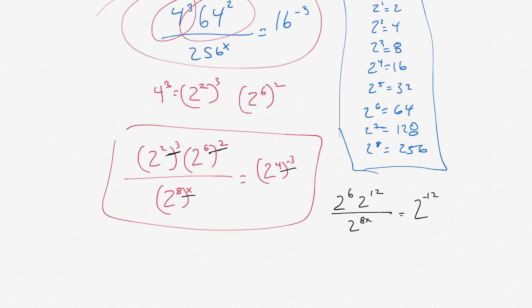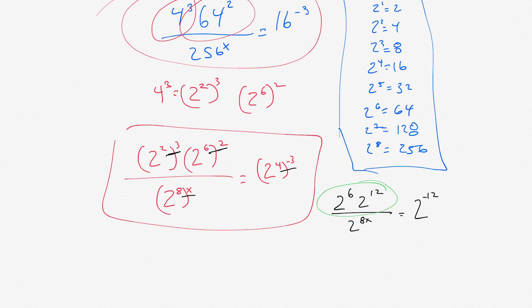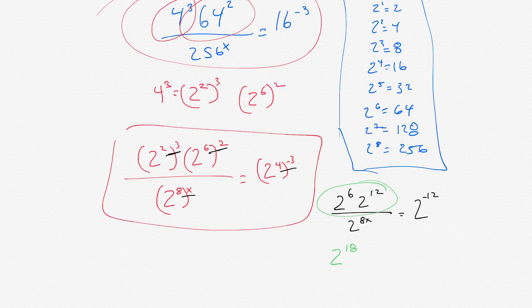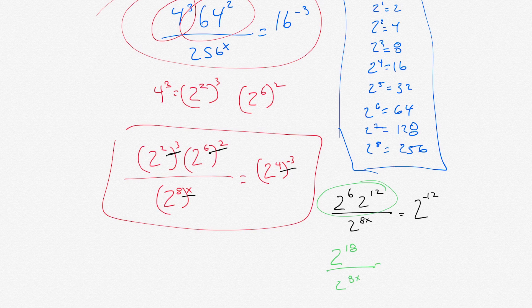Now, at this point, these two guys up here, we could just add the 6 and the 12. So, we get 2 to the 18 because when we have 2 to the 6 times 2 to the 12, we add those exponents. So, 6 plus 12 is 18. So, we have 2 to the 18 over 2 to the 8x equals 2 to the negative 12.